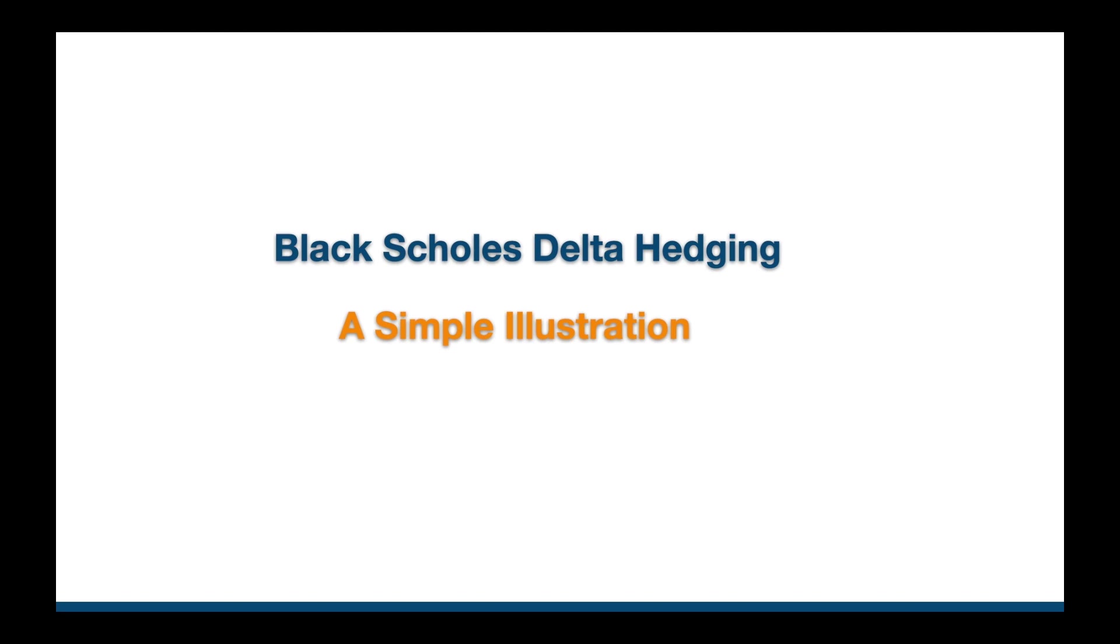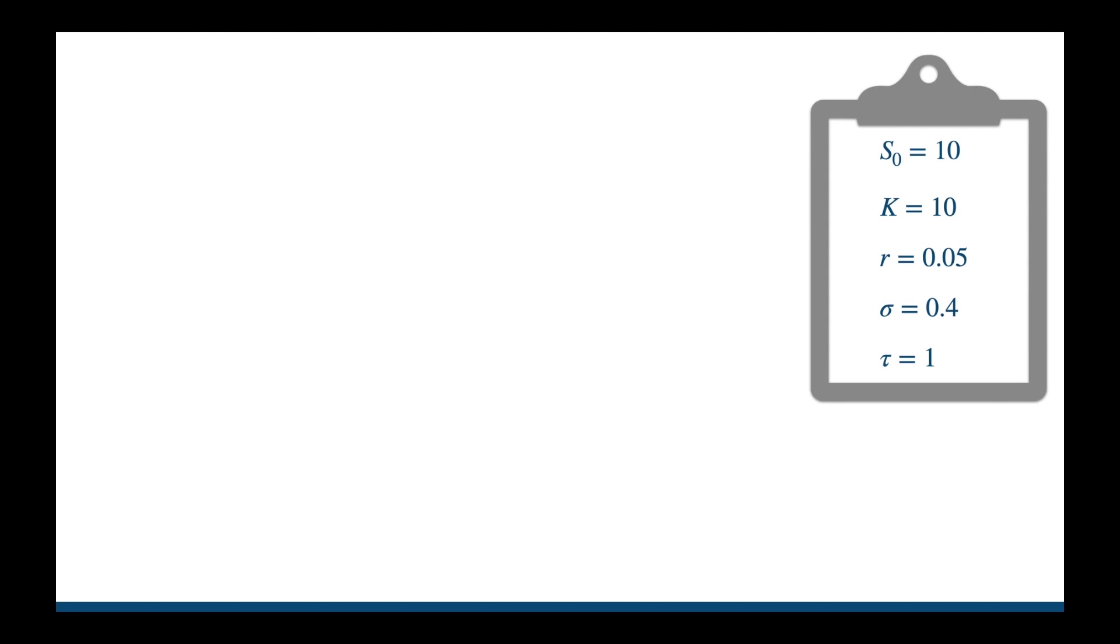Assume the assumptions made by Black-Scholes are satisfied. Let's consider a European call option with these parameters. You can use your favourite Black-Scholes calculator to confirm that the price of this option is 1.8. So assume you sold this option for 1.8, so you get this amount in cash today.